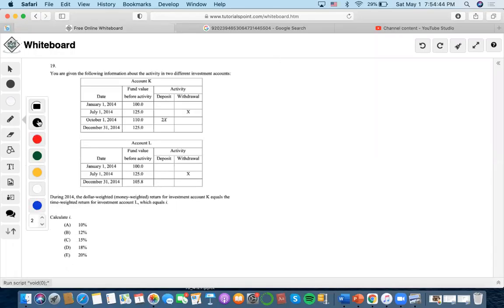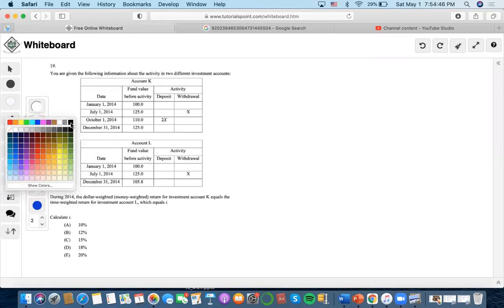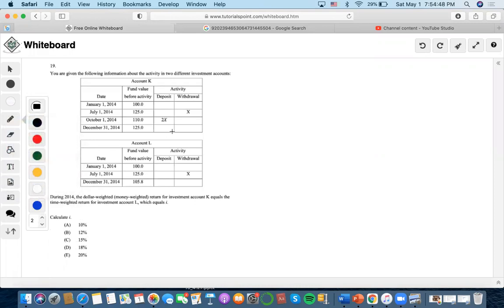Okay, so let's do this problem. We're given the following information with two different investment accounts. So there is the dollar-weighted (money-weighted) of K equals the time-weighted of L.